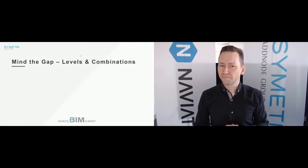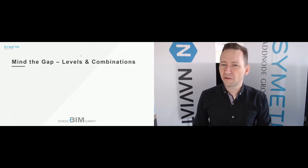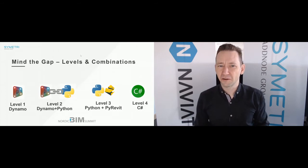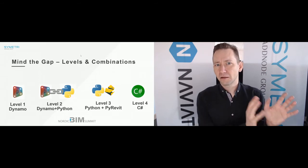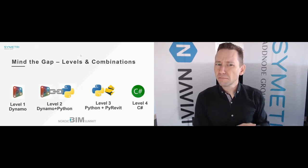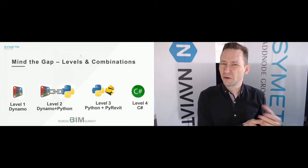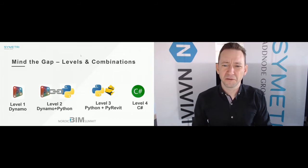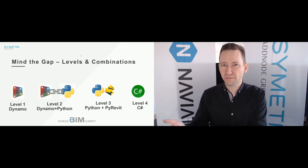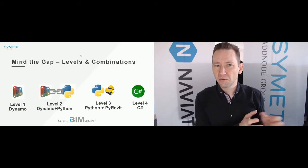How do I recommend you get started? Think of it as game levels. Level one: you hardly know anything, you're just getting started, so it's probably Dynamo — make a simple Dynamo script that does something small and you're happy with it. Maybe you'll stay at level one. Level two: combine it with Python, make it faster, make it do more than you could in Dynamo. Level three is Python and PyRevit. Level four is C#. Maybe you don't get to level four — maybe you leave the game in the middle — and that's fine. You don't need to go to level four every time.